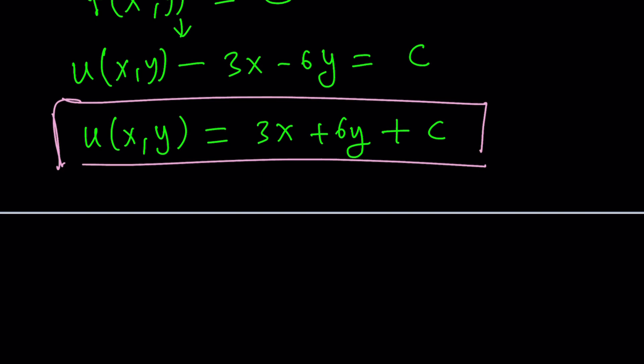And there's no guarantee that you can find this directly. Typically, sometimes maybe what if we didn't end up with a constant? The solution would be 3x + 6y plus another function.